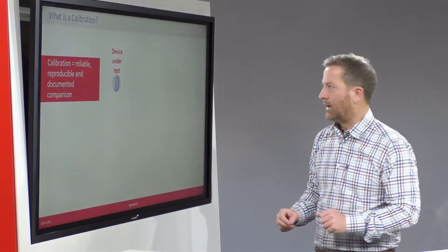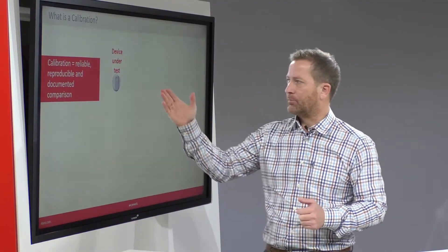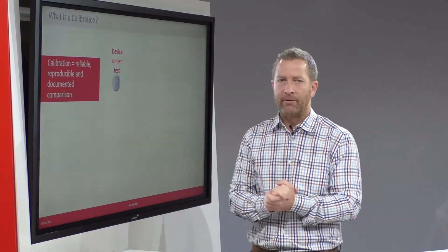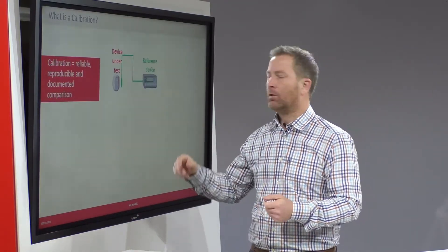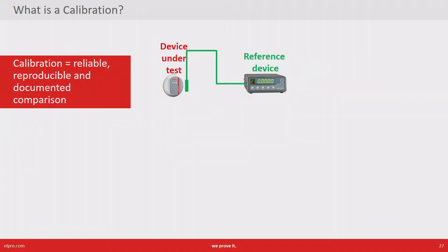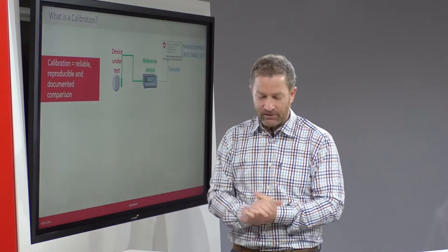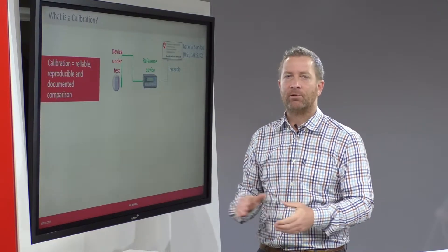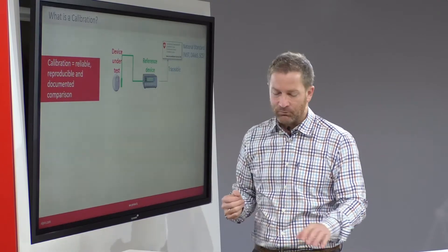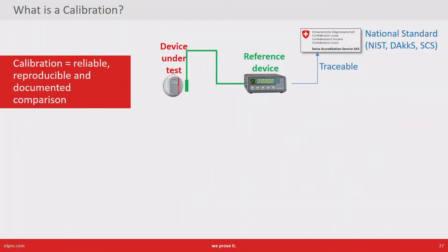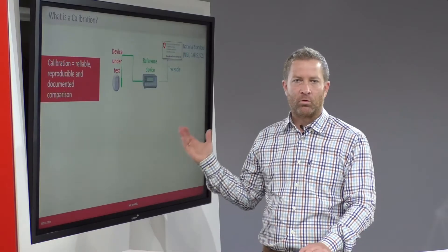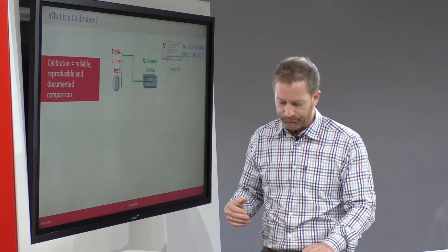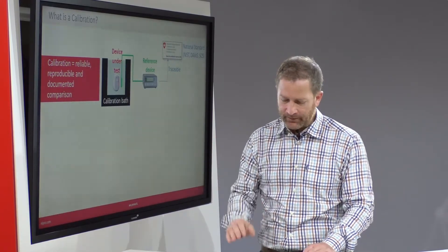These devices we now want to calibrate and produce a reliable, reproducible, and documented comparison to a reference instrument. The reference instrument is a high-precision instrument traceable to the national standard. In Switzerland this would be SAS, the Swiss Accreditation Service. In the US it's NIST, or in Germany it's DAkkS, the German Accreditation Service.